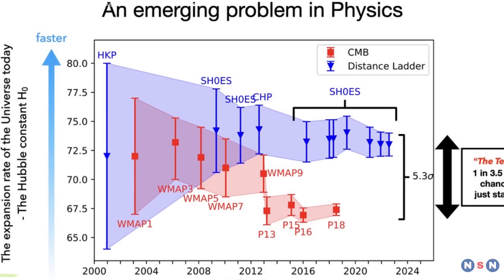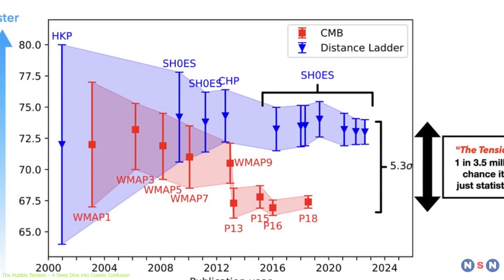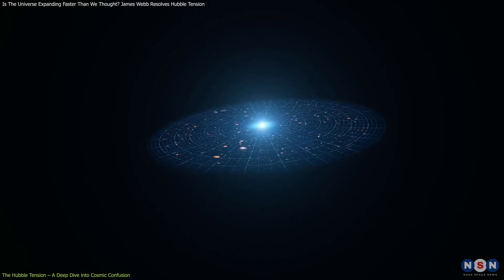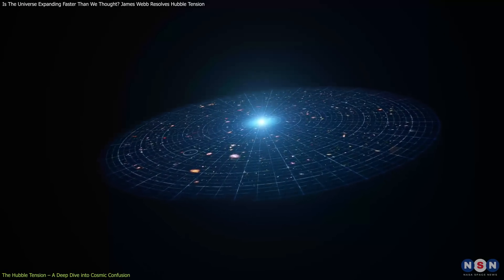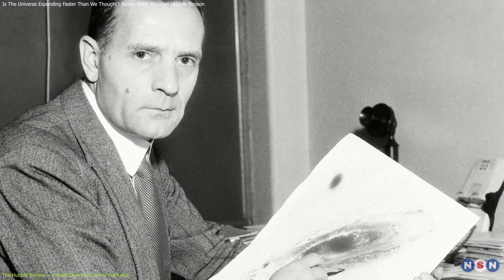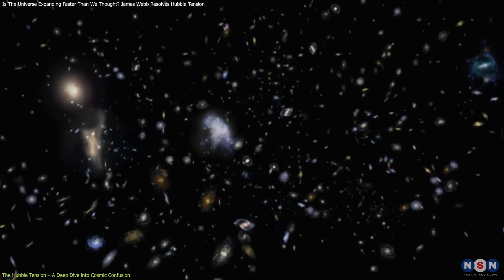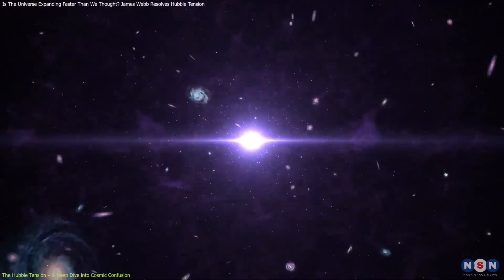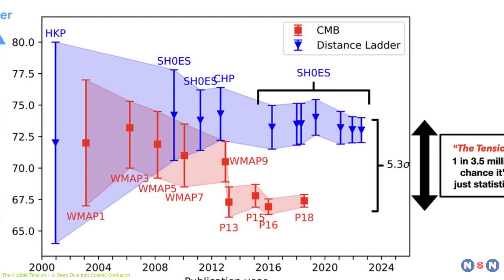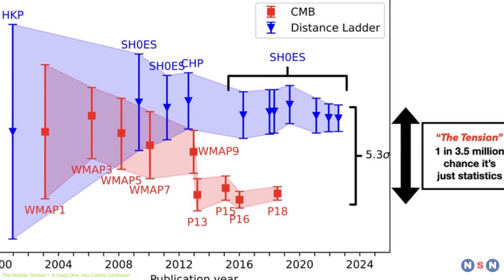The Hubble Tension is a major challenge in modern cosmology, centered on conflicting measurements of the Hubble Constant, which is the rate at which the universe is expanding. This debate traces back to Edwin Hubble's 1929 discovery that the universe is expanding, which revolutionized cosmology and led to the development of the Big Bang Theory. Over time, two primary methods for measuring the Hubble Constant have emerged, producing divergent results.